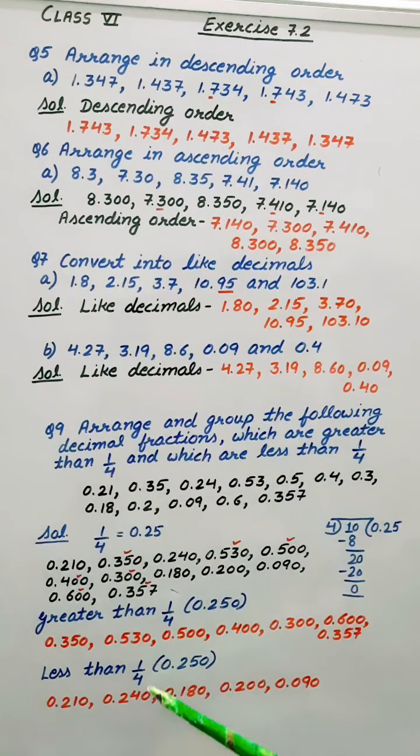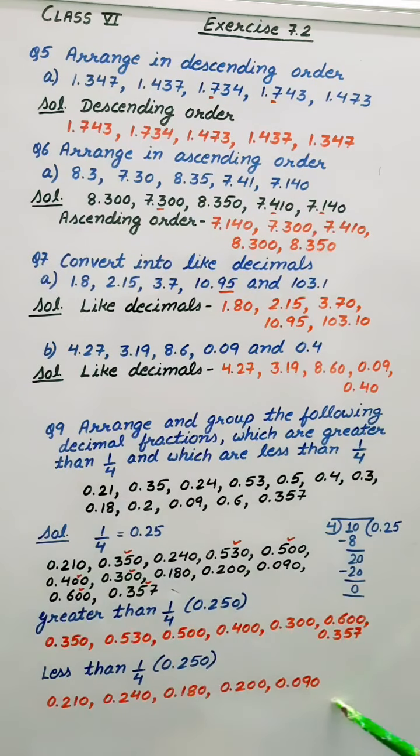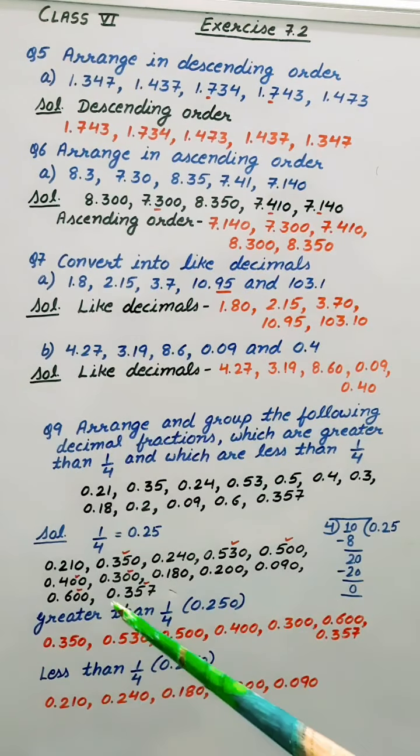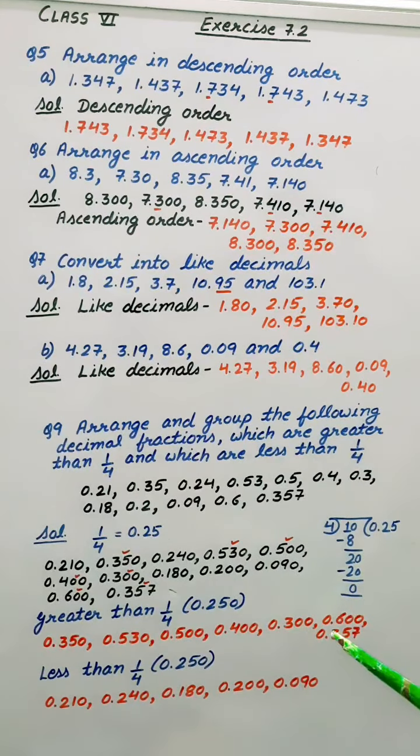And the numbers which are less than 1 by 4, all the remaining numbers. I have written here. So these are less than 1 by 4. These are greater than 1 by 4.